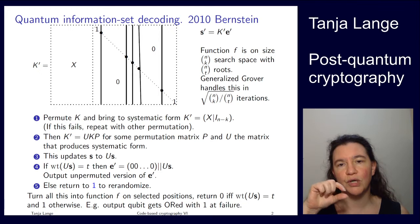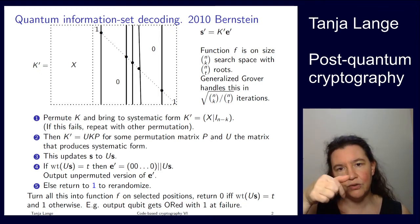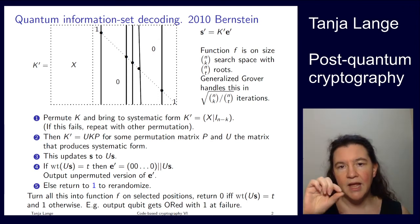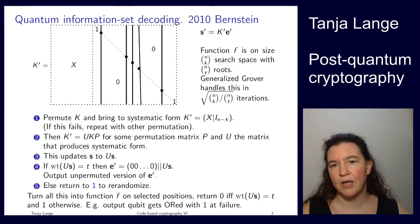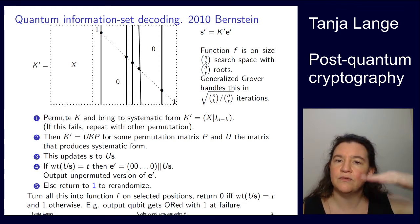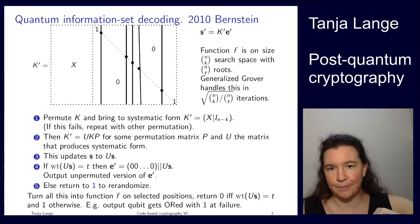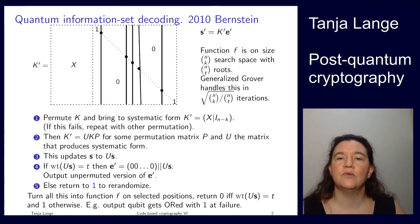So if you remember in Grover, we had to watch out. We were doing these two steps where we first flip the amplitude, negate the amplitude, and then flip the amplitude around the average. And the important thing why we need to know how many solutions there are is that we need to stop at the point when the amplitudes that we like are high. Now if you have two good values rather than just one, that means we have to stop sooner. We have to stop about square root of 2 sooner.